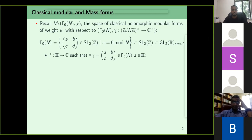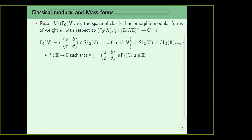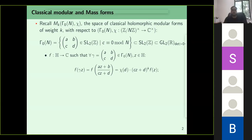Let's recall classical modular forms. Throughout, I'll work only with one particular group, Gamma naught of N, which is a subgroup of SL2 whose left lower entry is divisible by N. We'll work with a character chi of (Z mod N)* which we'll think of as a character on Gamma naught of N, where we send (a,b,c,d) to chi applied to d.